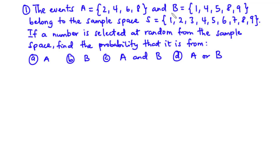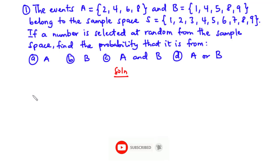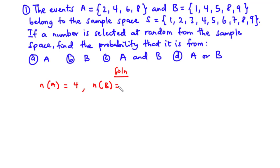We have elements in set A, elements in set B, and the sample space has elements 1 through to 9. If a number is selected at random from the sample space, we are going to find the probability that the number is from A, from B, from A and B, and from A or B. Let's write down the number of elements in each set: set A has 4 elements, set B has 5 elements, and the sample space has 9 elements.